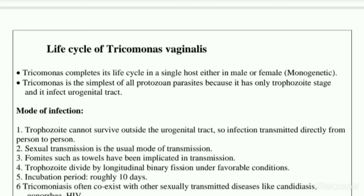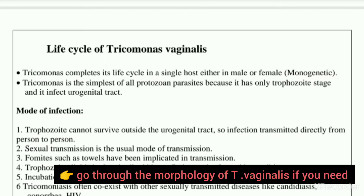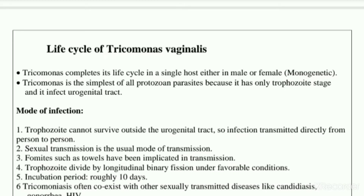I explained the term monogenetic in the previous video, but I will repeat it here. Mono means single — the parasitic protozoans which require only one host or a single host to complete their life cycle are called monogenetic. So Trichomonas vaginalis also requires only a single host to complete its life cycle, which may be a male or female.